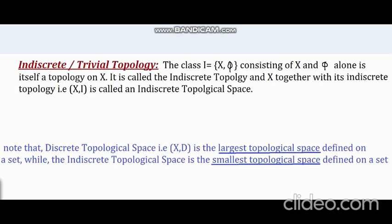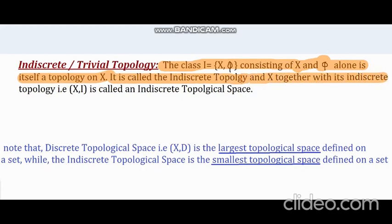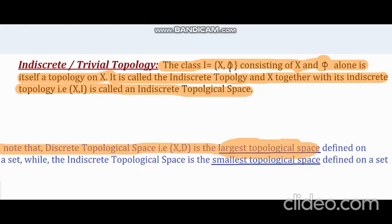Okay, now let's see indiscrete topological space. The class consisting of X and the empty set phi alone is itself a topology on X. It is called the indiscrete topology, and X together with its indiscrete topology is called an indiscrete topological space. Here is an important thing to note that, a discrete topological space is the largest topological space defined on a set, while an indiscrete topological space is the smallest topological space defined on a set.